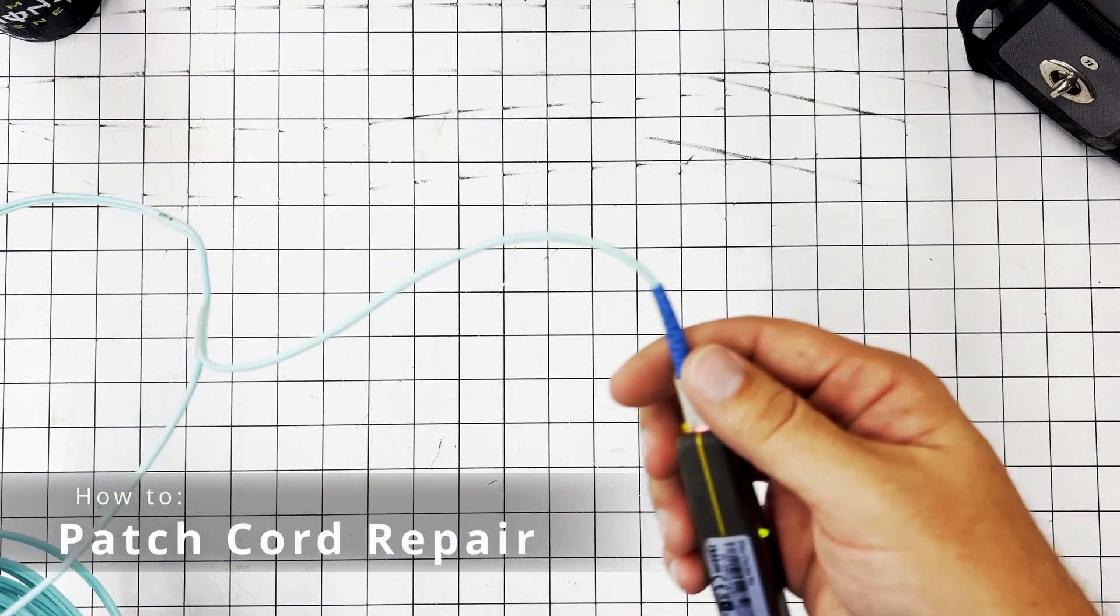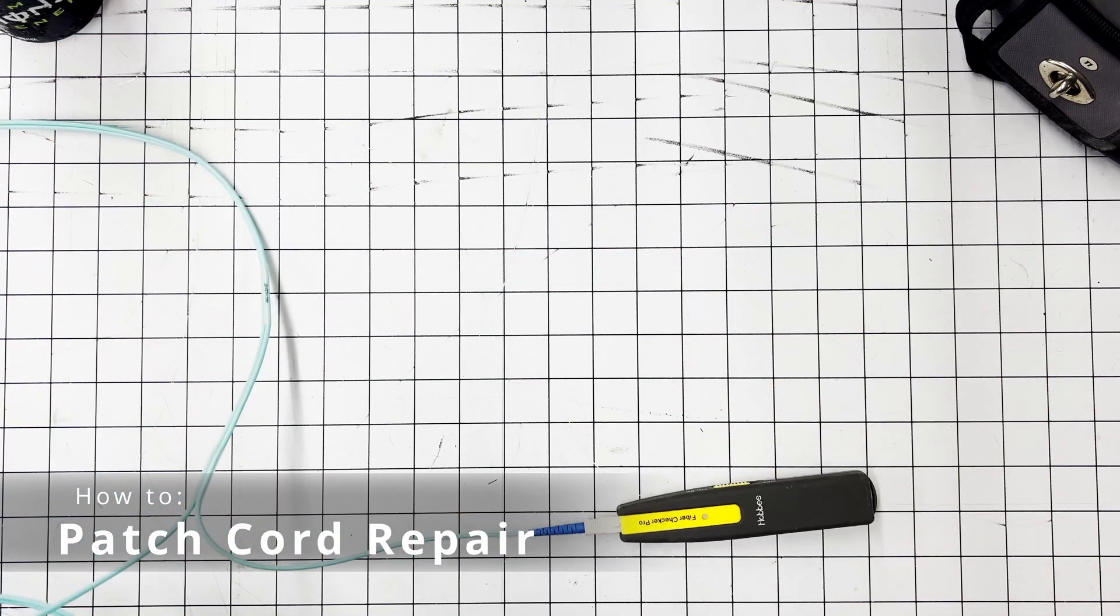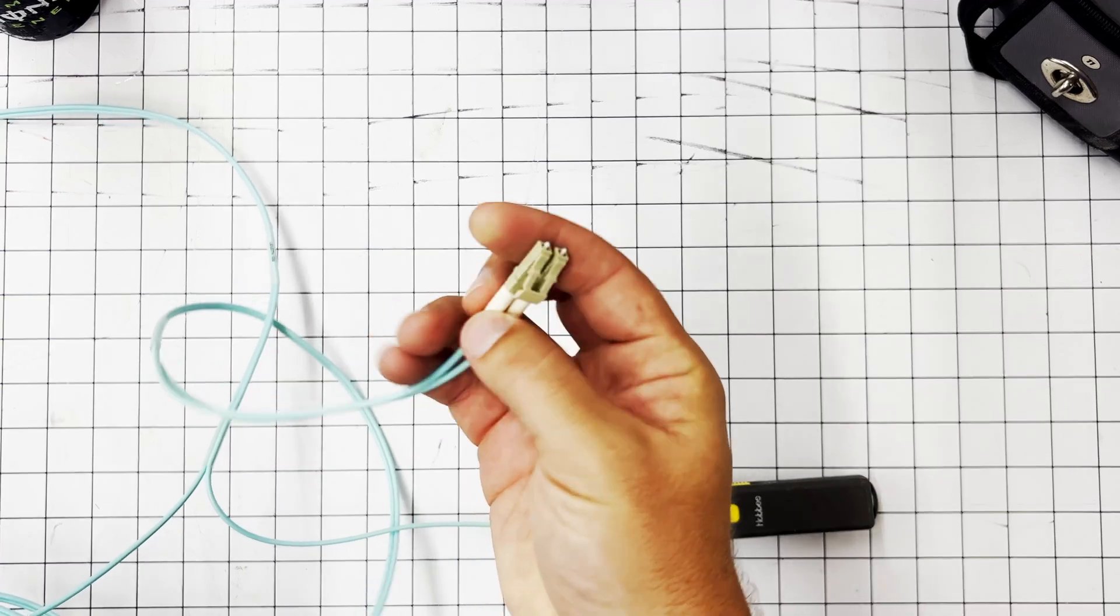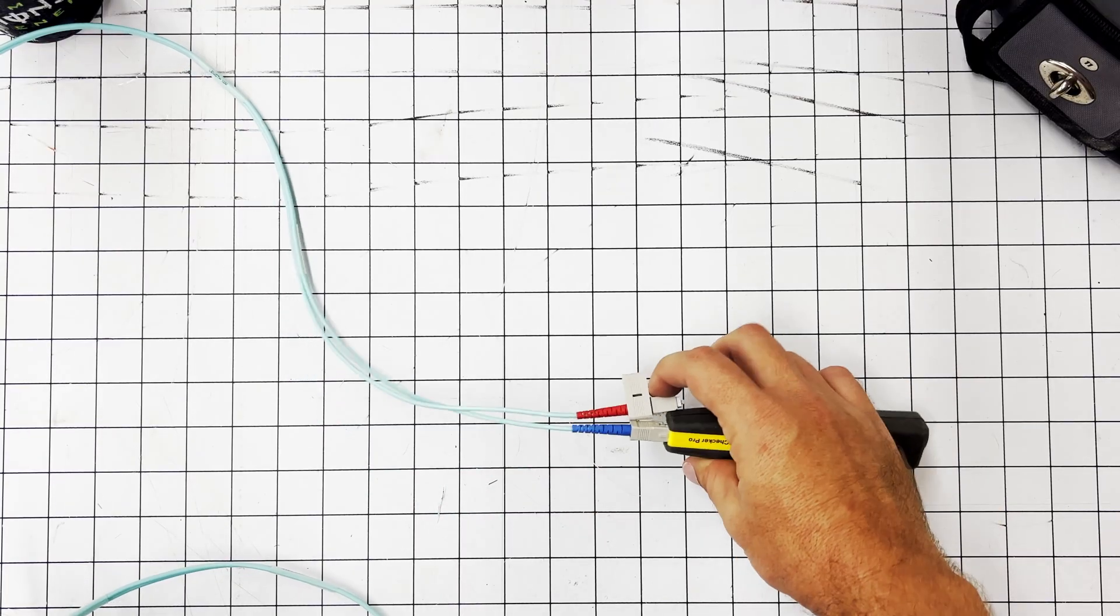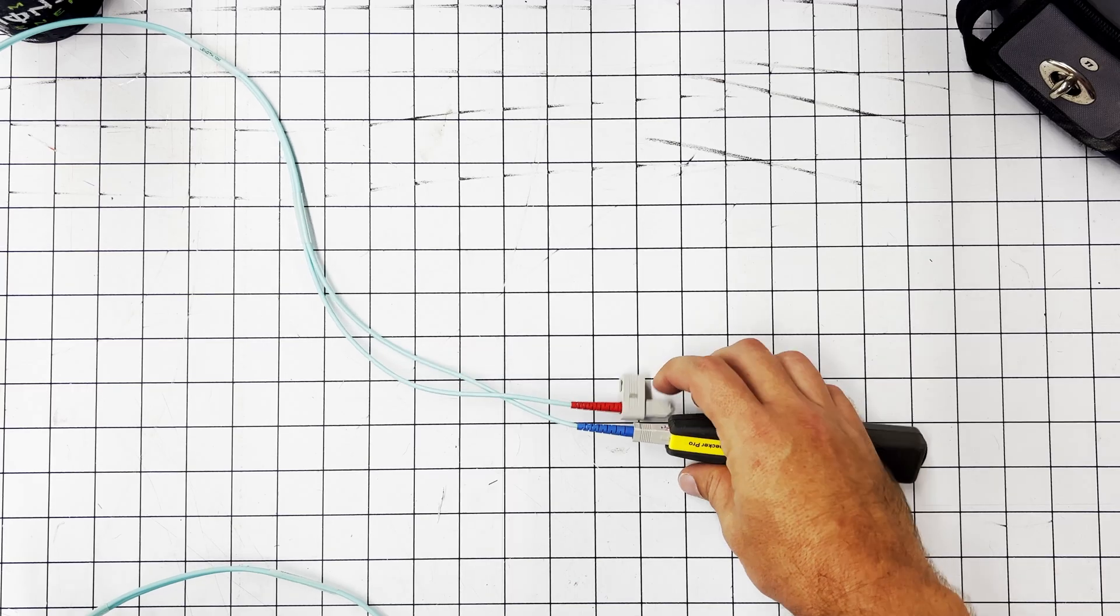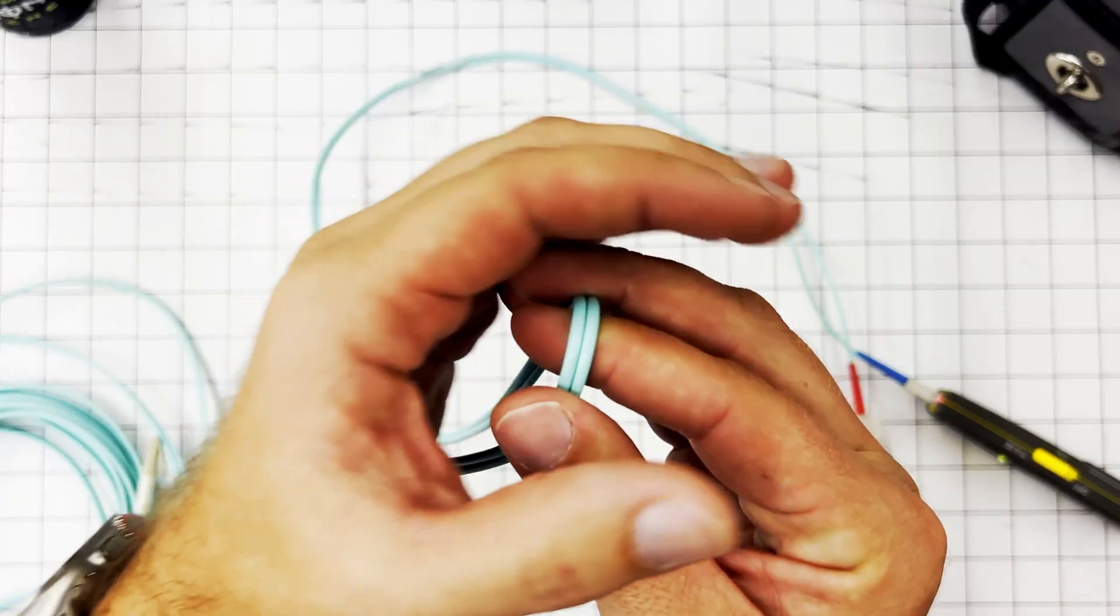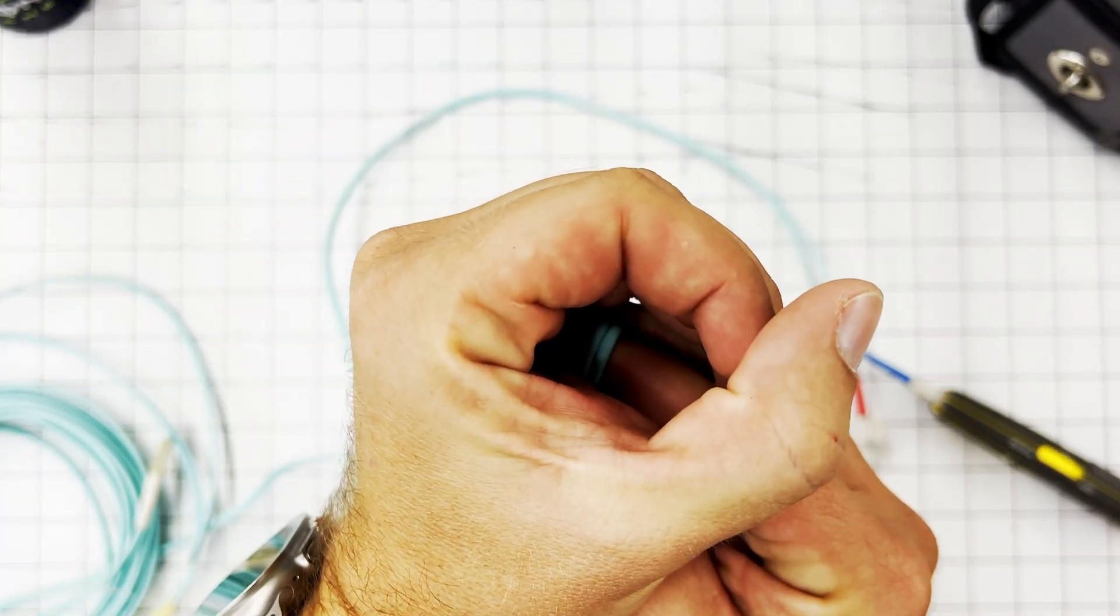Let's say you got a patch cord that's not working out for you. This is just a standard OM3 patch cord multi-mode. This one's an LC and over here an SC. I've taken this apart so I could put a laser on it. It just blinks laser across it. It's a visual fault locator is what they call it.